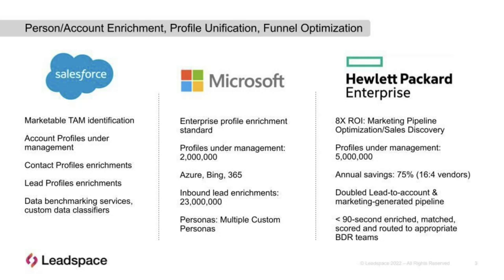Hewlett-Packard went from 16 data vendors to four. One of the reasons we help people do that is because, unlike a lot of solutions in the market, LeadSpace has an open platform where we assemble data — working with multiple providers to put together the best data set. We can also plug in other data service providers, as we have partnerships with most of the largest providers. In HP's case, they cut their annual data spend budget by 75% and simplified their vendors from 16 to 4. They're also doing lead-to-account scoring and routing with us that has to have under a 90-second SLA because they're trying to match people and route them to BDRs for immediate follow-up.